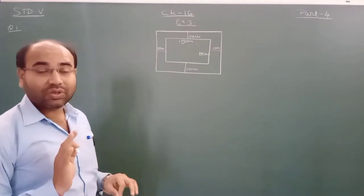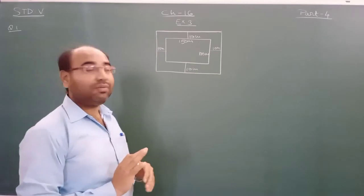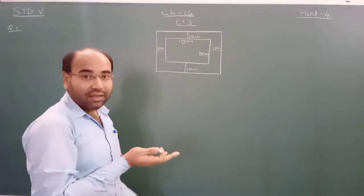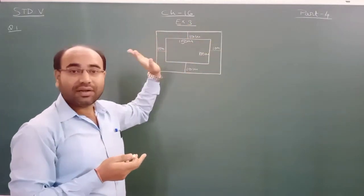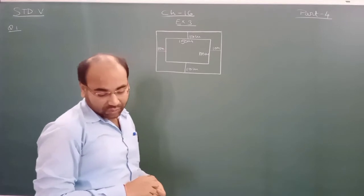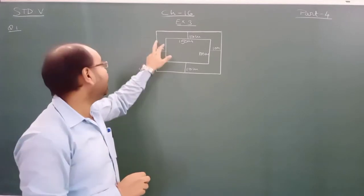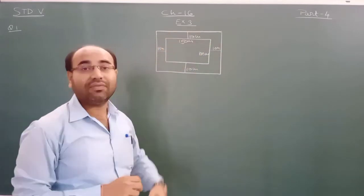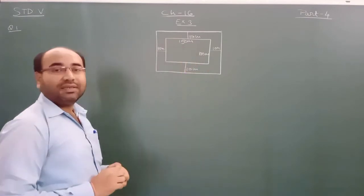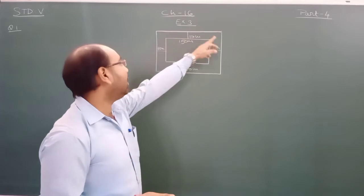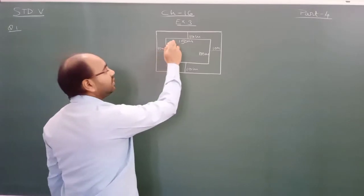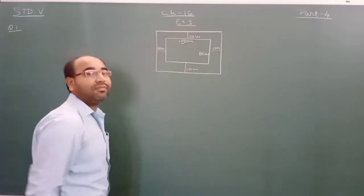The breadth is 100 meter. To find the area of the path, it is very important to read and understand the question. Around the field a path is made, so that is why we have made another rectangle. This inner rectangle is the field and the path is between the inner and outer rectangle. The inside is given and the outside we will find out.